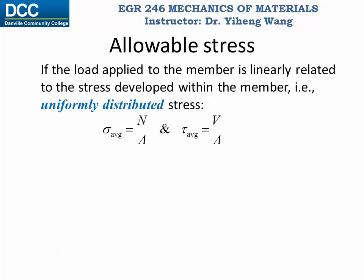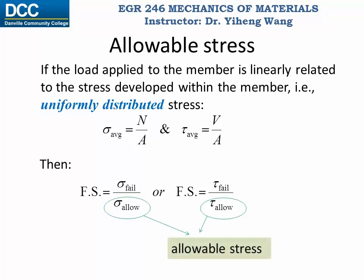If stress developed in the member is proportional to the load — and don't forget this is an idealization — then the factor of safety can be rewritten as failure stress over the allowable stress. Keep in mind that materials could have different failure normal stress and shear stress, or sometimes even different normal tensile stress and normal compressive stress.